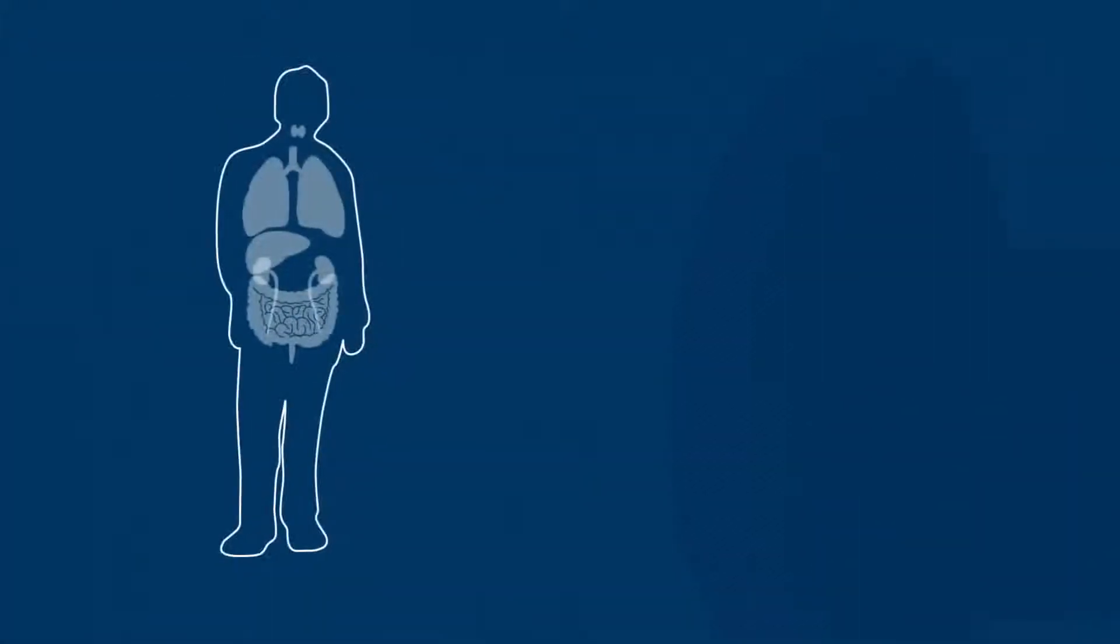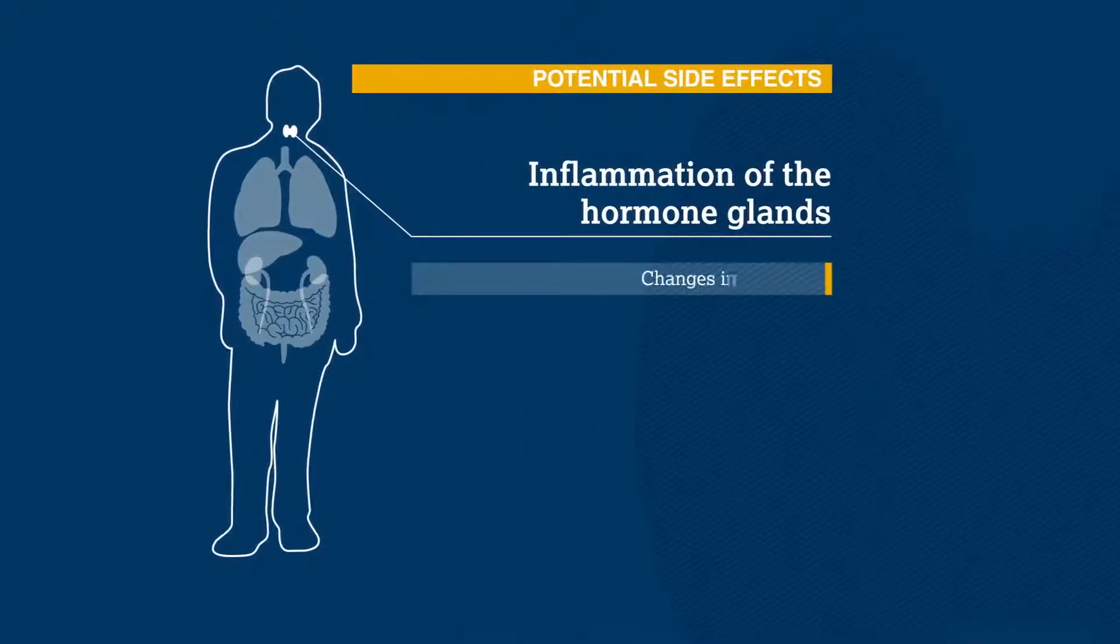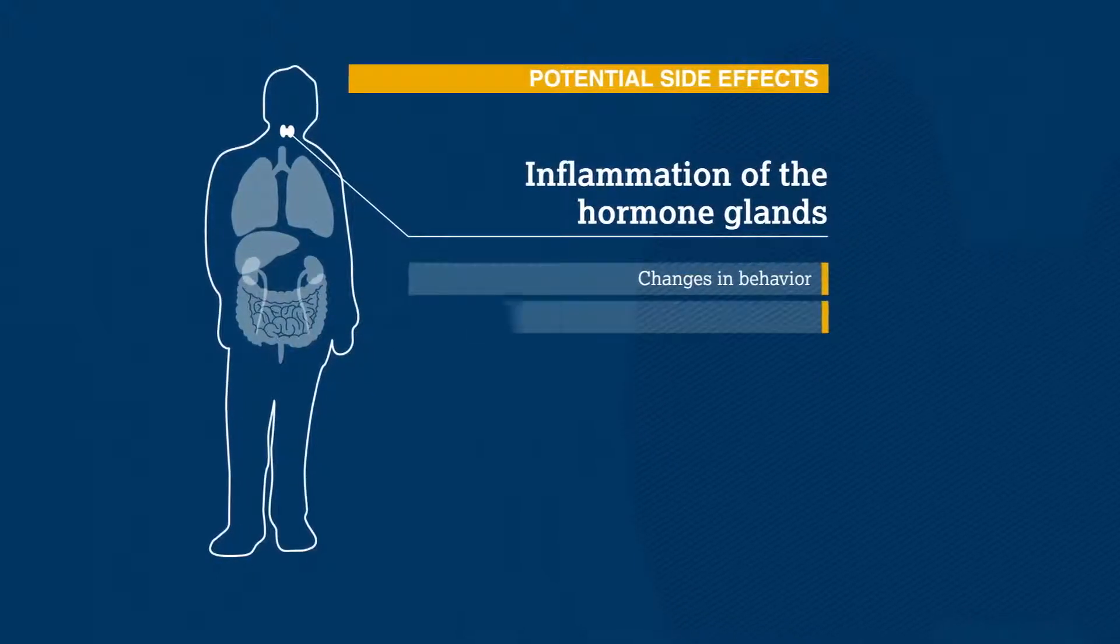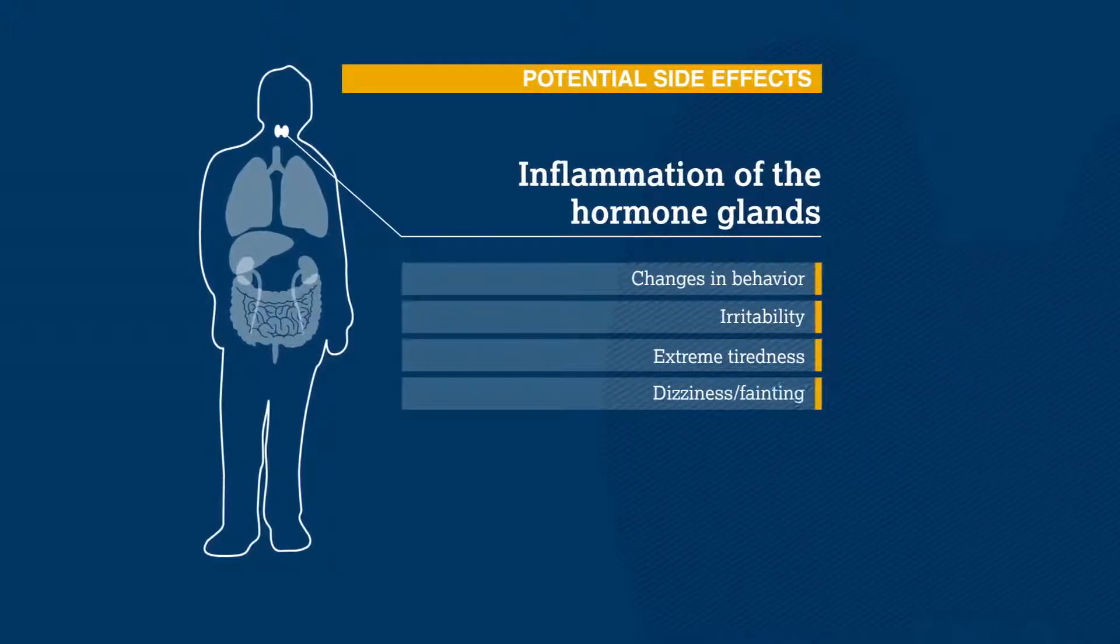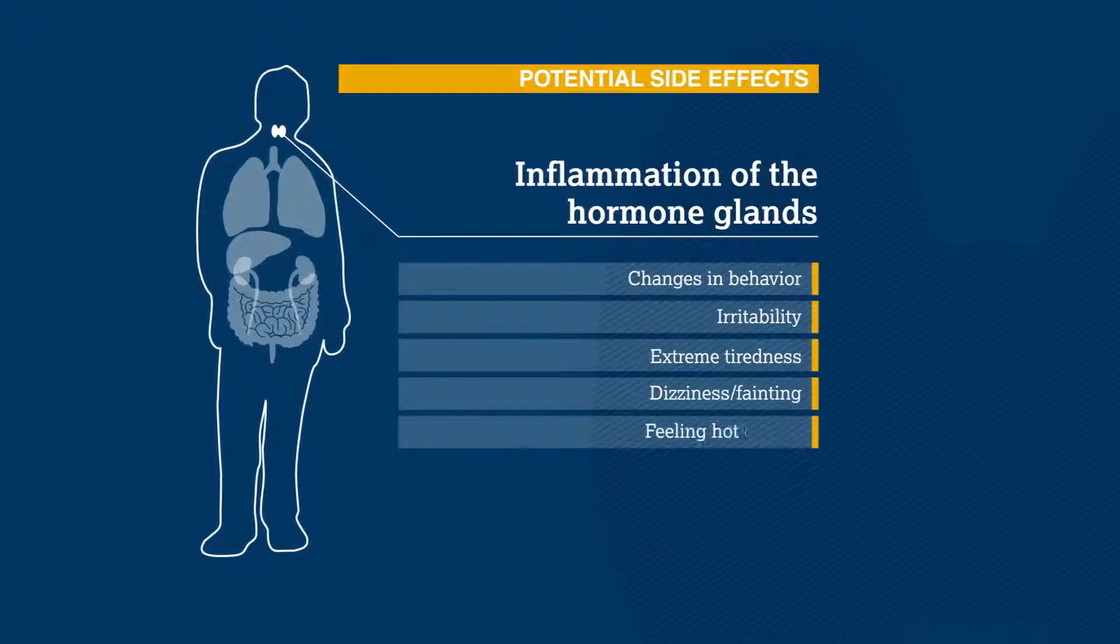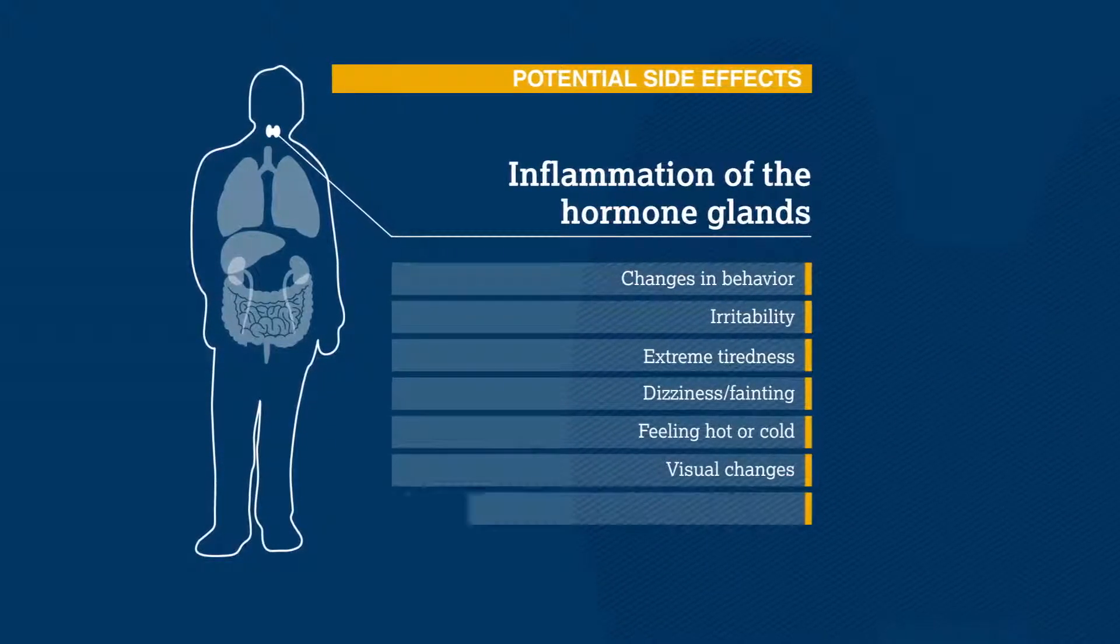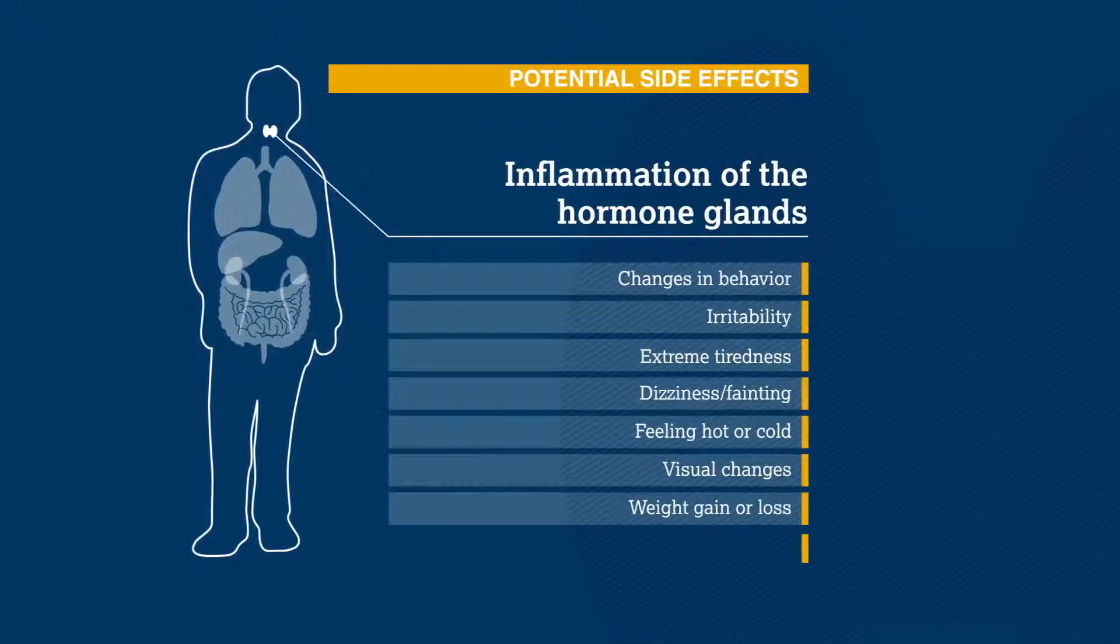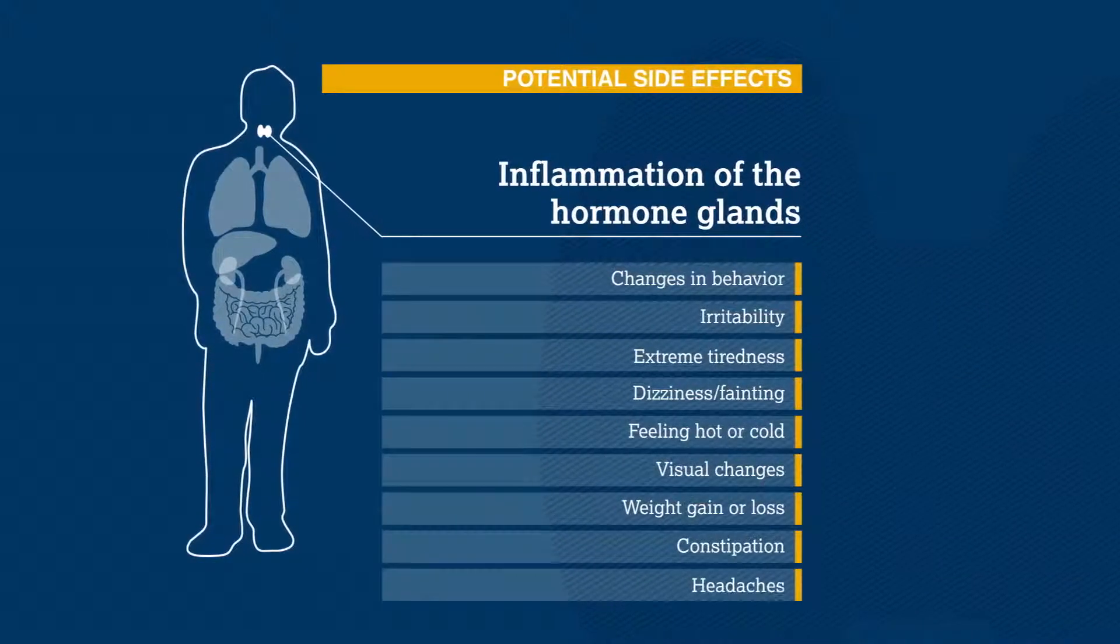Immunotherapy may also have an effect on a patient's hormones, which can cause unexpected changes in behaviour, being really irritable or tired all the time, dizziness or fainting, feeling hot or cold, or changes in vision. Others might notice sudden weight changes, constipation, or unusual headaches that last for a long time.